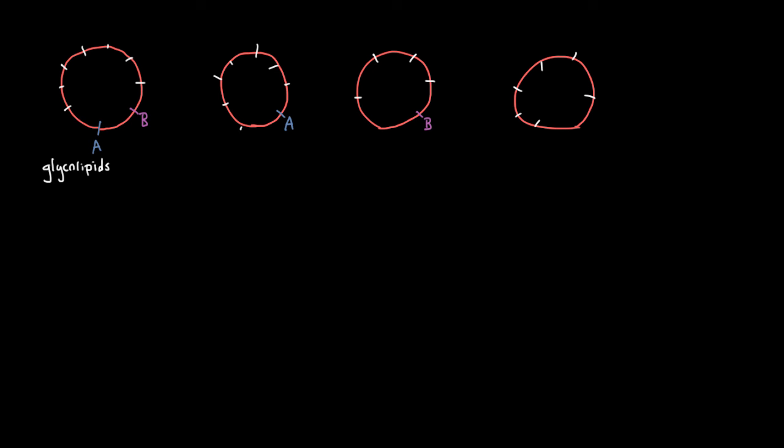And so, for example, it turns out that if you are the kind of person who has this kind of blood, that only has A's on your blood cells, then it turns out that you can't get a blood transfusion from someone who has this kind of blood, A's and B's. And so let's learn why.